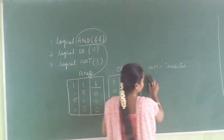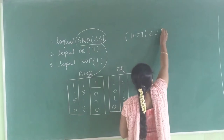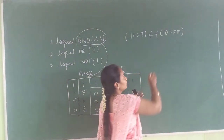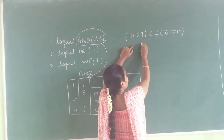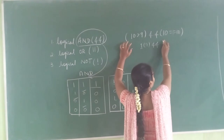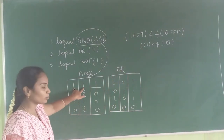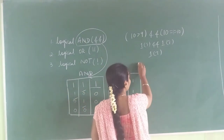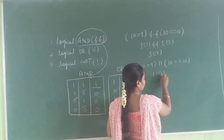Let me take an example to explain these. For AND operator: if 10 is greater than 9 AND 10 == 10 — individually, 10 > 9 is true (value 1), and 10 == 10 is also true. So the condition is true AND true. In the AND operator, if both inputs are true, the output is true. For the same example with OR: true OR true — both are true, so the answer is also true.